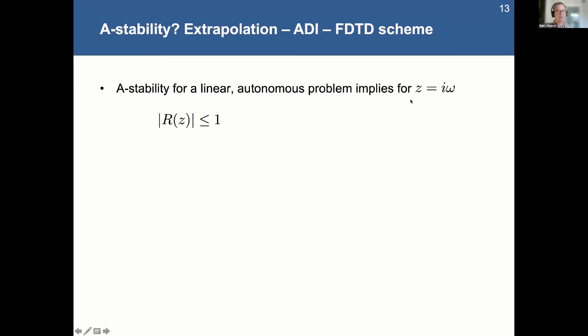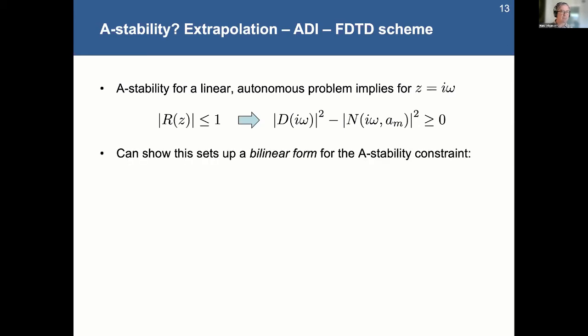So for that A-stability, of course, we know the constraint there is that the amplification factor has to be less than or equal to one. And we know that this actually has to be exactly one for the origin so that this is this difference of denominator and numerator. And remember, the numerator for this extrapolation method is the only place where the coefficients are mixing come into play. So you can show this is a necessary requirement for it to be A-stable.